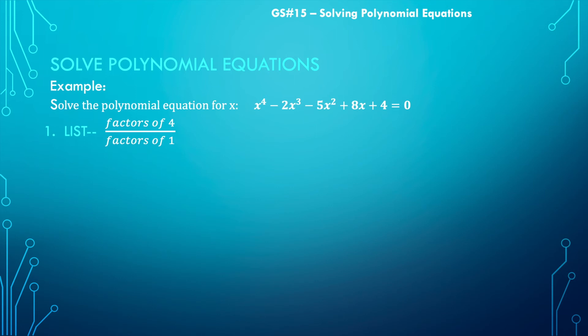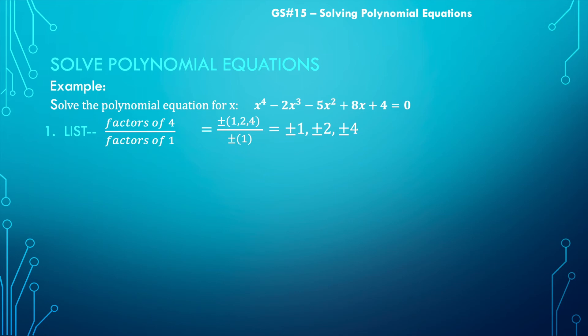What are all the factors of 4? Hopefully you said 1, 2, and 4. And the factors of 1 — that's just 1. So we have a smaller number of possibilities this time. When I list them all out, I just have plus or minus 1, plus or minus 2, plus or minus 4 — only 6 options. I'm going to look at the graph to be efficient.